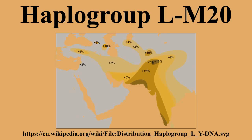In India, Haplogroup L M20 has higher frequency among Dravidian castes but is somewhat rarer in Indo-Aryan castes. It reaches up to 68% in some tribes and castes of Karnataka, 38% in some castes and tribes of Gujarat, and up to 48% in some castes in Tamil Nadu. Earlier studies reporting very high frequency of Haplogroup L M20 in Tamil Nadu appear to have been due to extrapolation from a sample of 84 Kallas, a Tamil-speaking caste, among whom 40 displayed the M20 mutation. The presence of Haplogroup L M20 is rare among tribal groups.